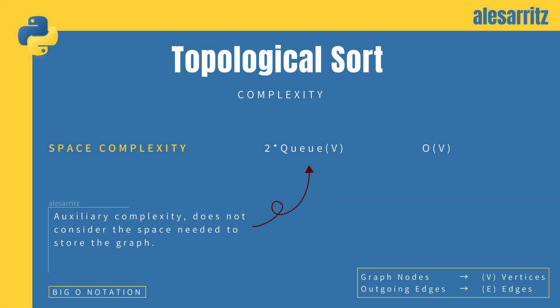Since all tests went well, let's now analyze the complexity of the algorithm through big O notation. From now on, for simplicity, I will talk about vertices and edges, instead of graph nodes and outgoing edges.